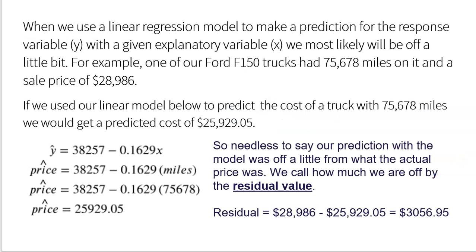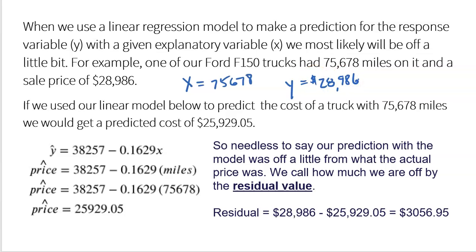When we use a linear regression model to make a prediction for response variable Y with a given explanatory variable X, we most likely will be off a little bit. It's called a model — it's not perfect. They're called predictions, meaning they might not actually happen. For example, one of the actual Ford F-150 trucks had 75,678 miles on it, and it had an actual sales price of $28,986. The actual X value was 75,678 miles and the actual Y was $28,986.